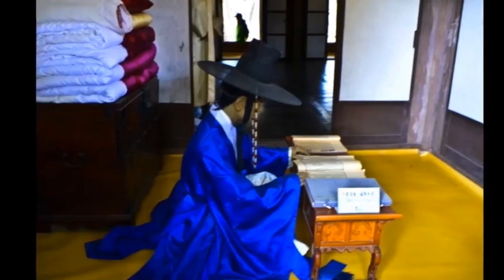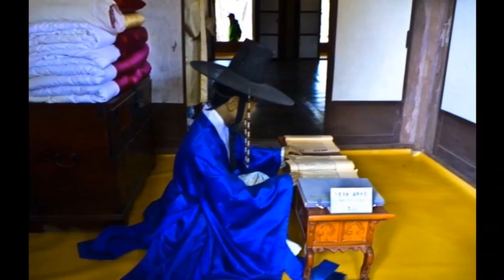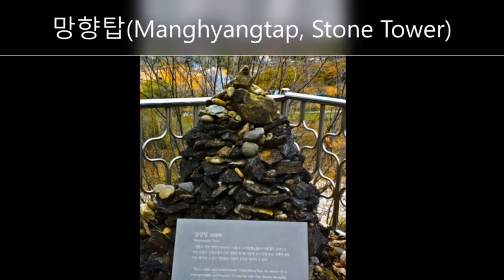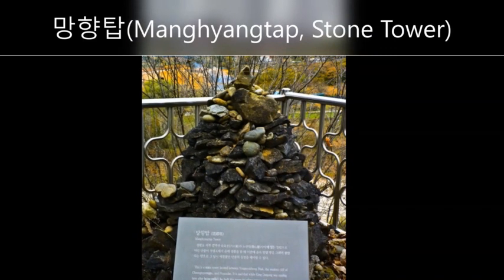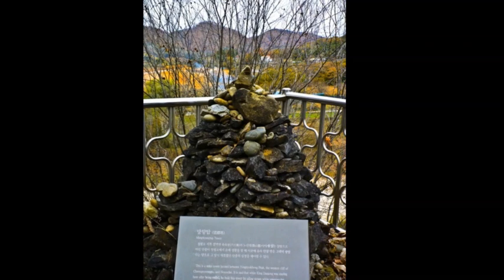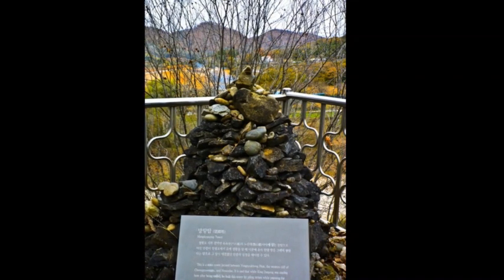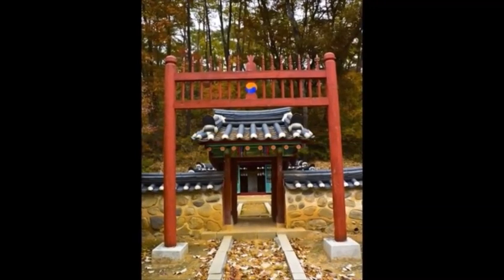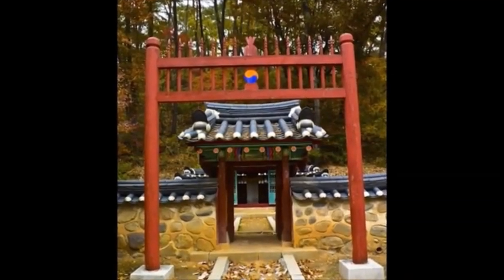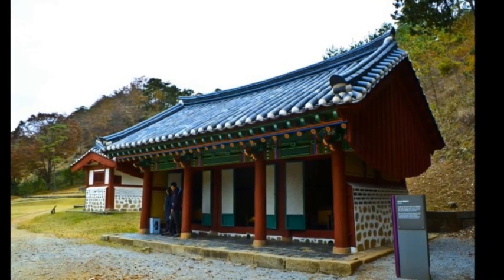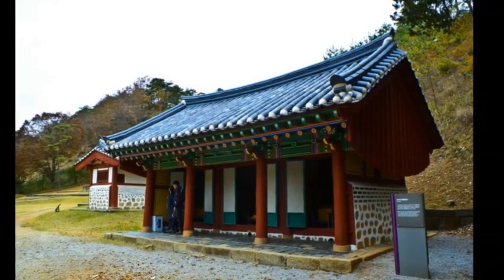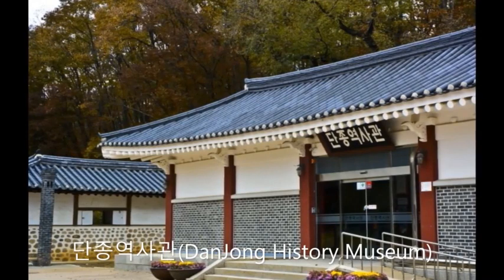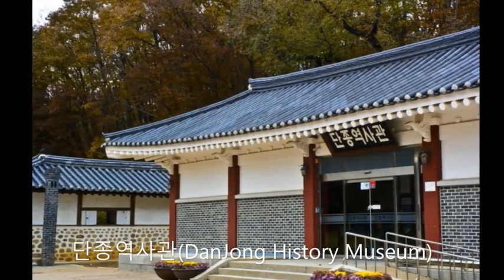This picture is a model of Danjong. This is called 망향탑 — it is a stone tower. King Danjong made this stone tower because he missed Hanyang, the capital city of Joseon. This is a place where people honor ancestor rights for Danjong. This is the Danjong History Museum, where you can find out more about Danjong.